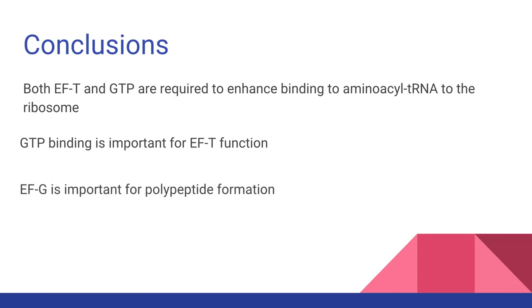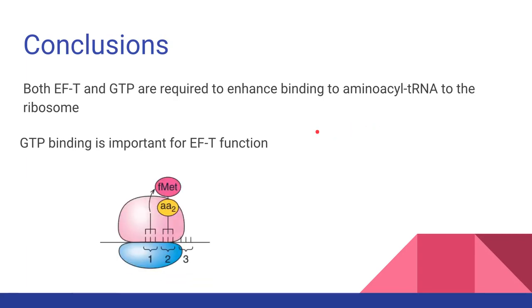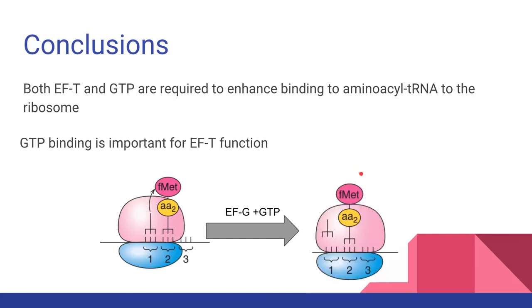In the second experiment, polymerization of poly-U required EF-G in the presence of high concentrations of GTP. This data is consistent with the third step of elongation. EF-G, along with GTP, translocates the growing peptidyl-tRNA with its mRNA codon to the P site.